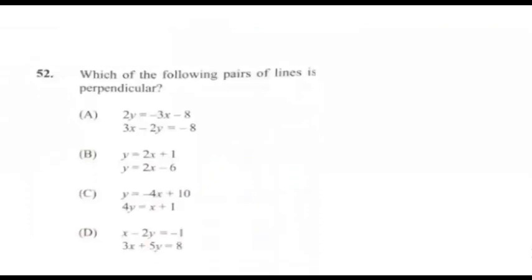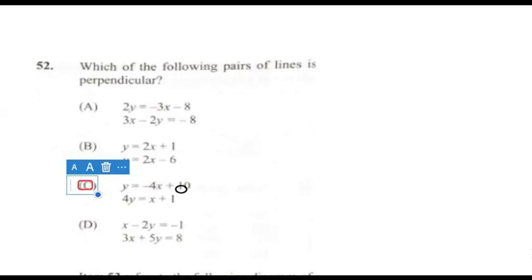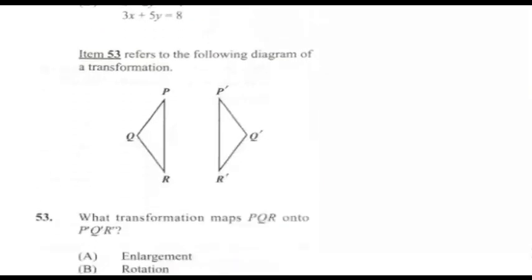Question 52: Which of the following pairs of lines is perpendicular? That would be C. Perpendicular lines intersect at right angles, and their slopes are opposite reciprocals of each other — their product is −1. Working out the slopes of options A, B, C, and D, the only pair whose slopes are opposite reciprocals is C, where one slope is −4 and the other is 1/4. Answer for 52 is C.